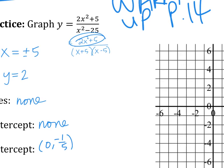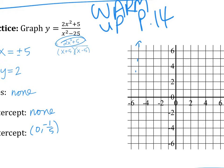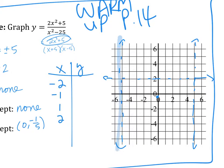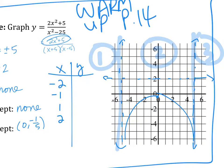That's all we need. We have vertical asymptotes at ±5, horizontal asymptote at y = 2, no x-intercept, and y-intercept at −1/5. Now plug in some more points — probably around x = −2, −1, 1, 2. Wherever your vertical asymptote is, it creates sections. This function creates three sections, and each section must have a graph.